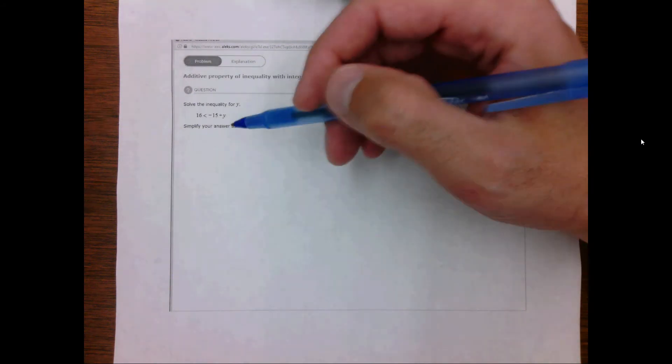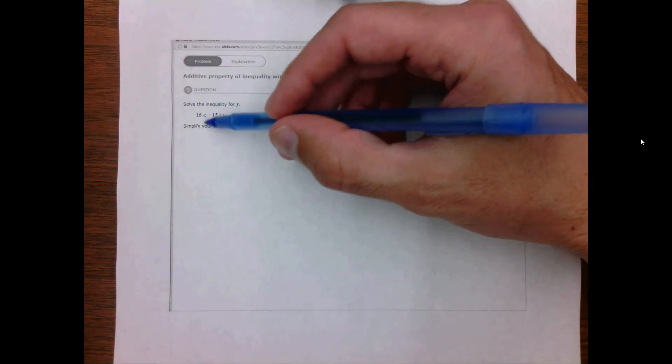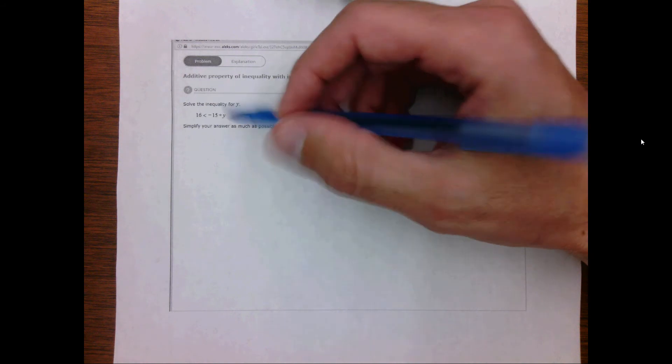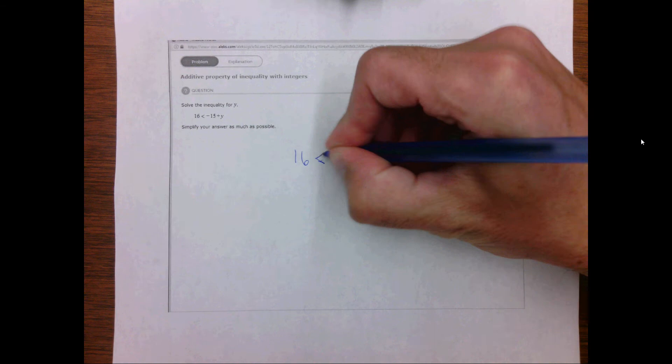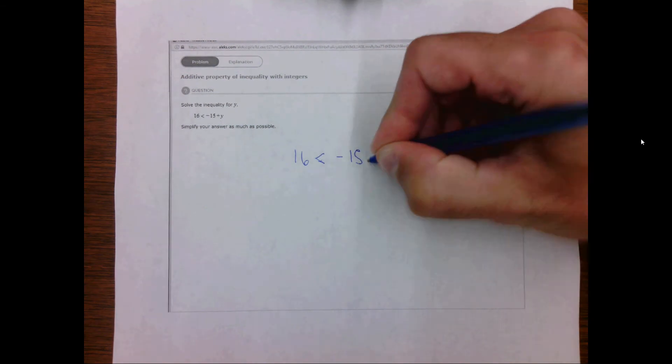This can be done the same way as if this were an equal sign with one slight difference at the end. Let me show you. I'm going to start by rewriting it. 16 is less than negative 15 plus y.